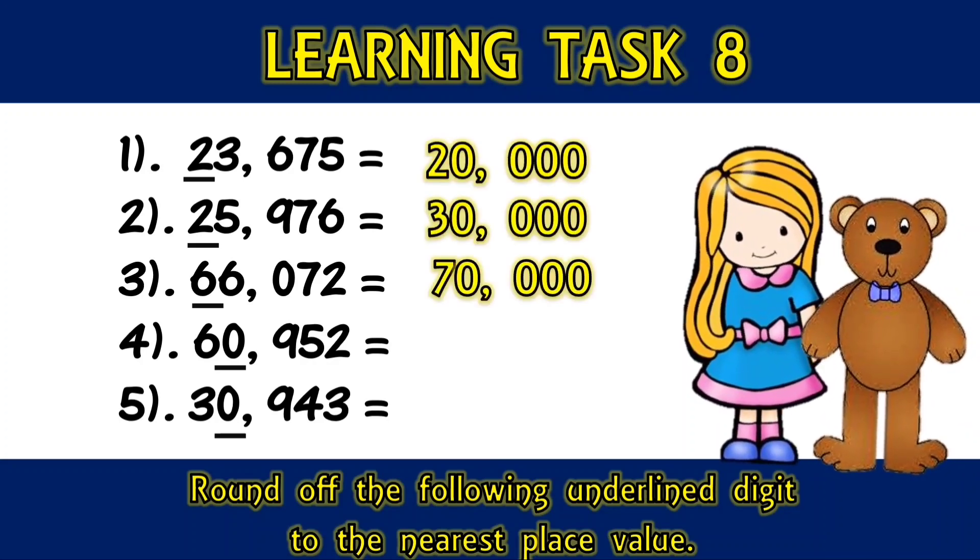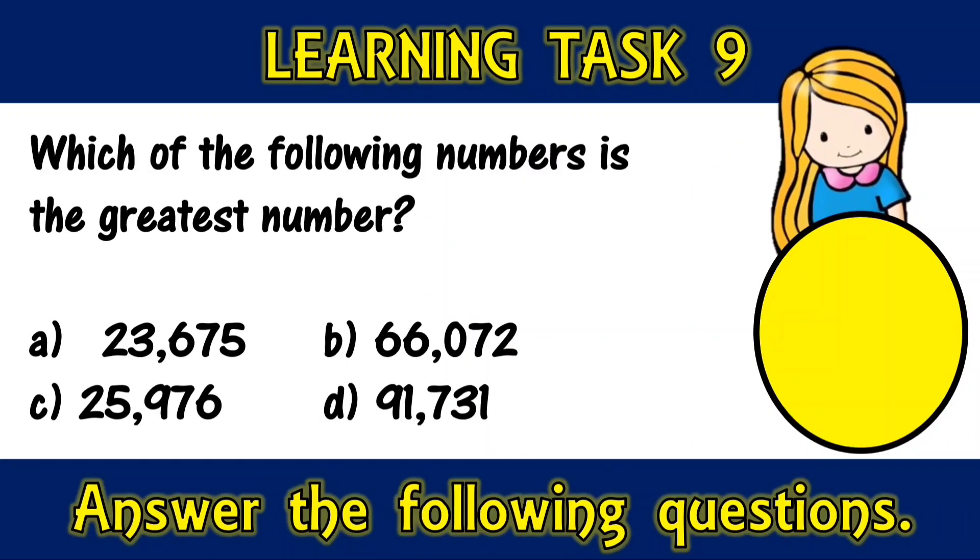Which of the following numbers is the greatest number? A. 23,675, B. 66,072, C. 25,976, or D. 91,731.